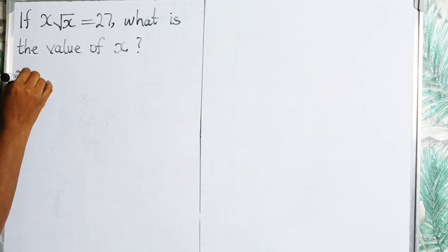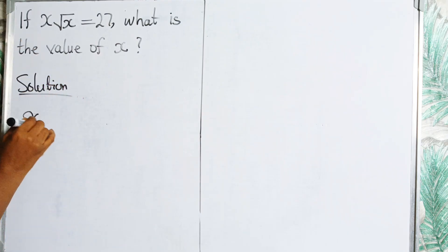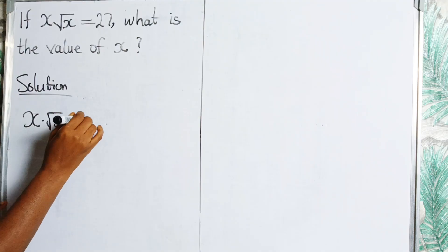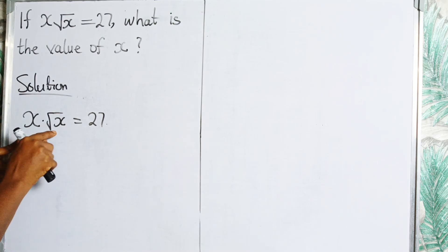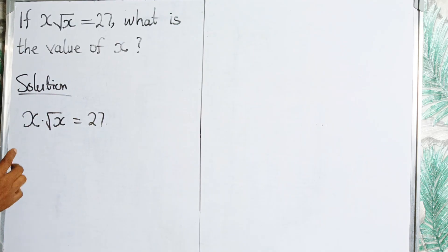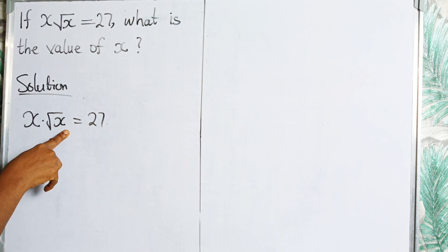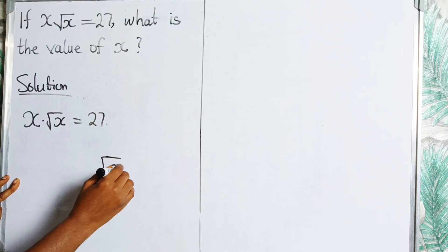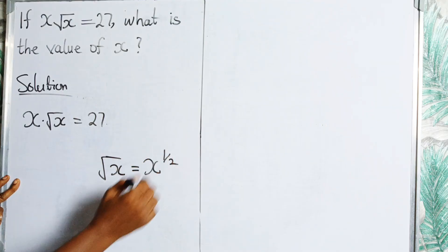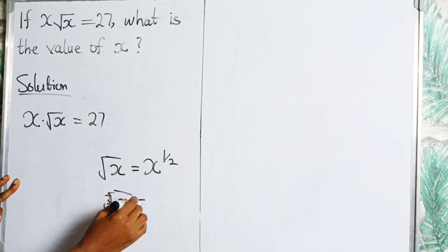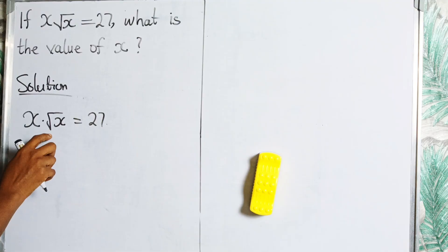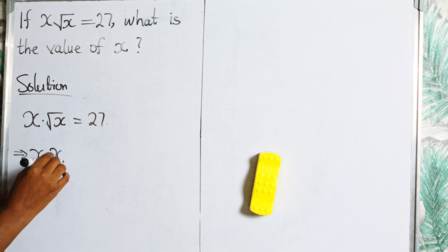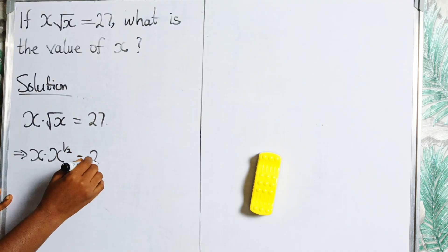So let's have your solution. Here we have x root x equals 27. The first thing we are going to do — we cannot look for the value of x having this root here, so we have to clear the square root. The first method is that we can replace this root x with x raised to power 1 over 2. So root x is the same thing as x raised to power 1 over 2. Similarly, the cube root of x would be x raised to power 1 over 3. So we replace root x with x to the power 1 over 2, giving us x times x raised to power 1 over 2 equals 27.